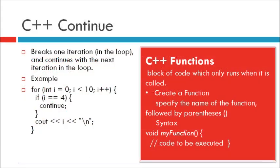Now see C++ continue. The continue statement breaks one iteration in the loop if a specified condition occurs, and continues with the next iteration in the loop. This example skips the value of 4: for (int i = 0; i < 10; i++) { if (i == 4) continue; cout << i; }.